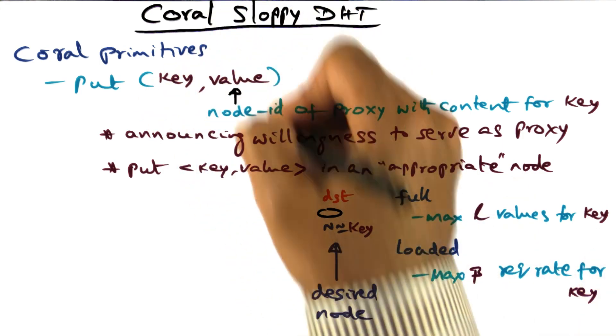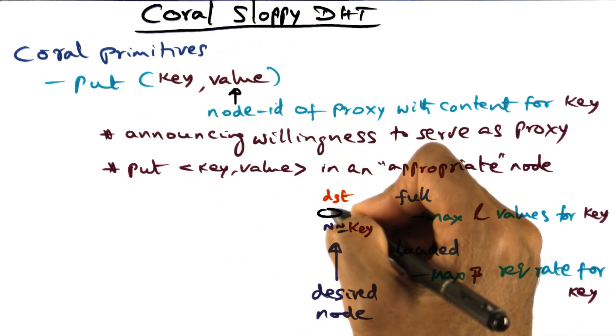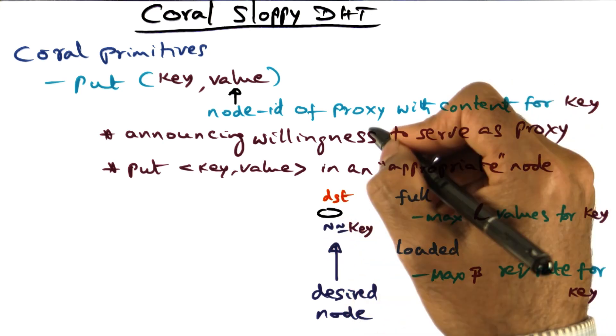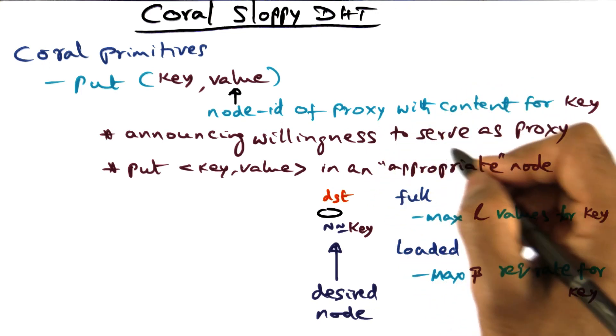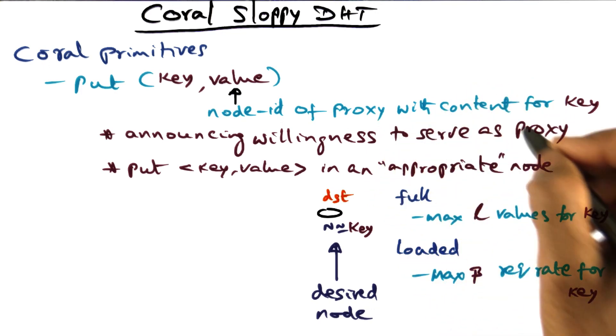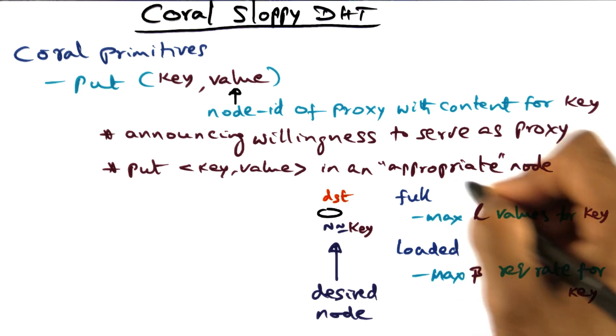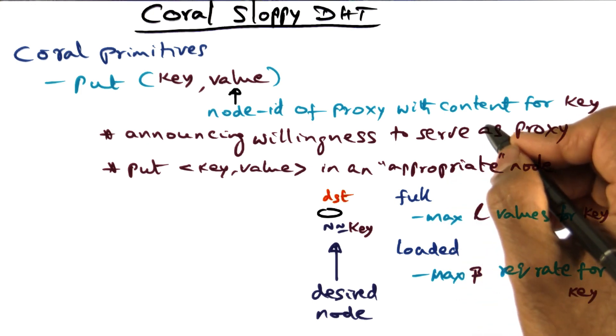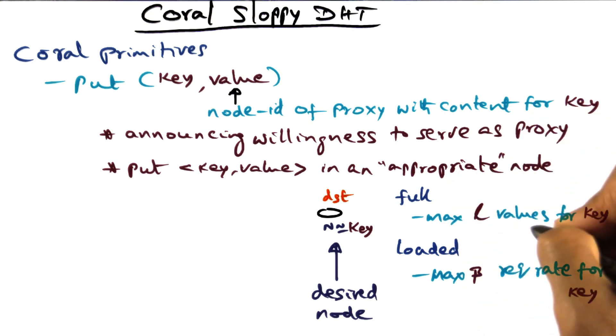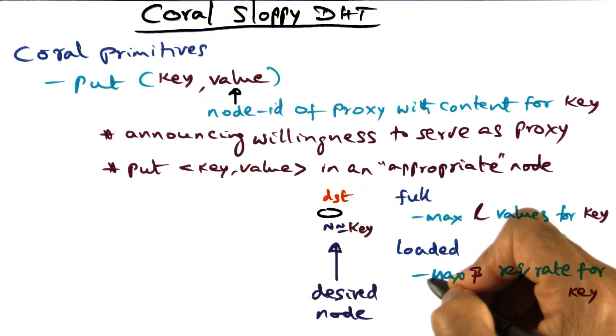This key-value pair can be placed by either the origin server that is creating the content, or it could be placed by a proxy who is saying, I'm willing to serve as a proxy for the content. So there could be lots of nodes that have the content and are willing to serve the content. All of them would have done put operations.